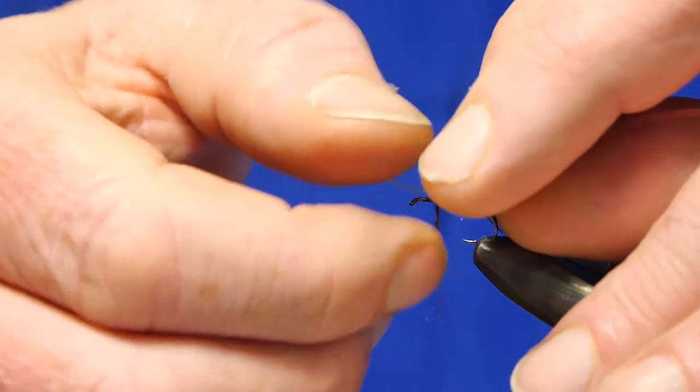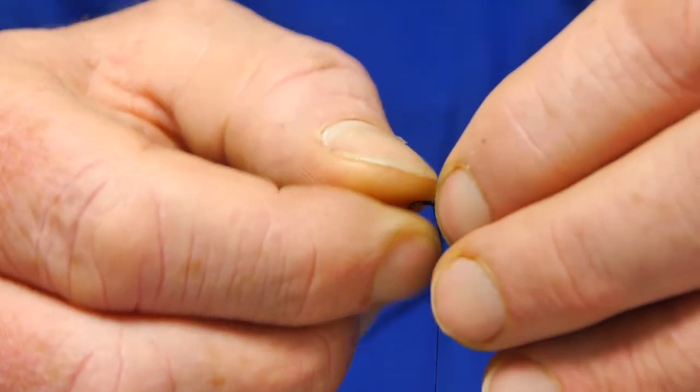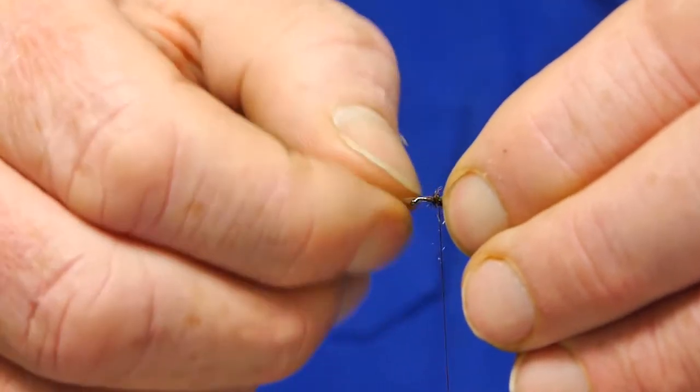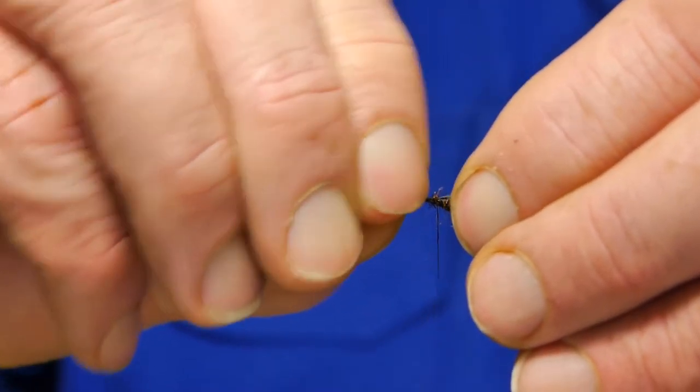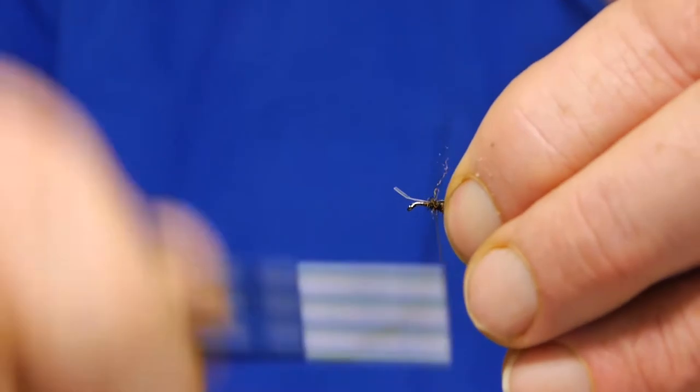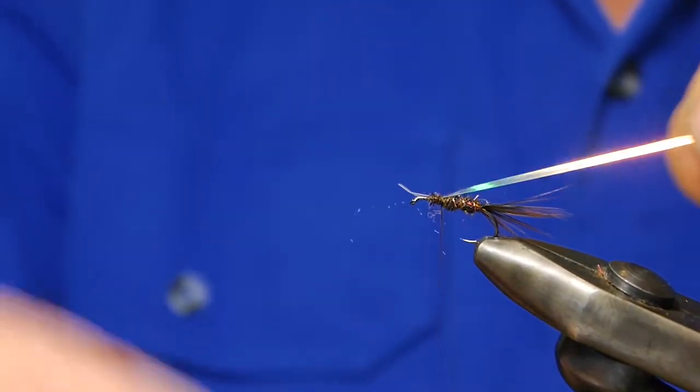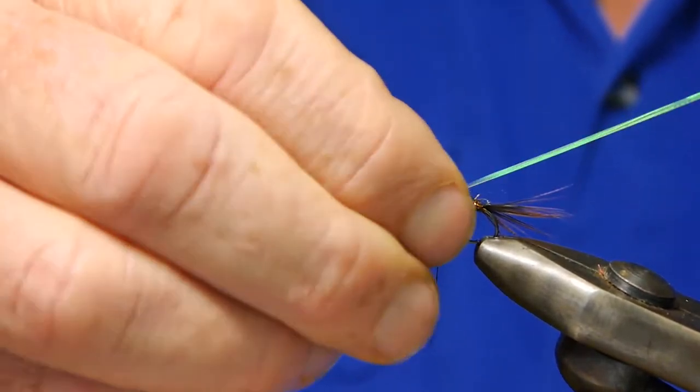You want that on top of the hook. Because what I'm doing with this, I'm just playing around with that stage of the hatch where that wing case starts to split. So as that nymph's up high in the water, the wing case is starting to split and that wing is just starting to pop out ready for the dun to emerge out of the nymph.